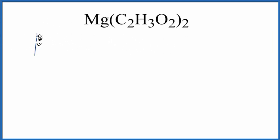So let's write down the elements first. We have Mg, C, H, and O. So these are our elements. And for the Mg, there's nothing written after it. There's no subscript. So there's just one magnesium.